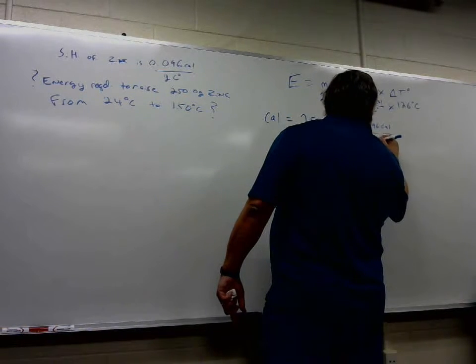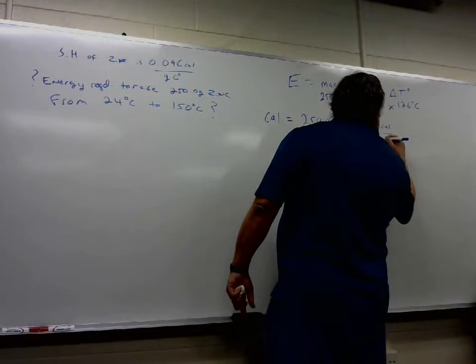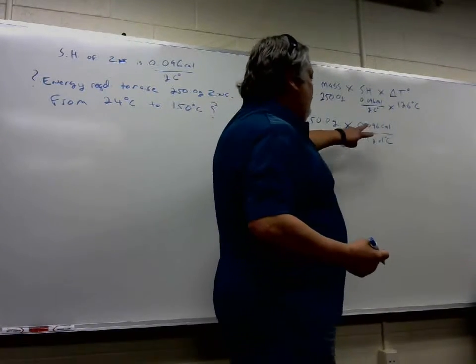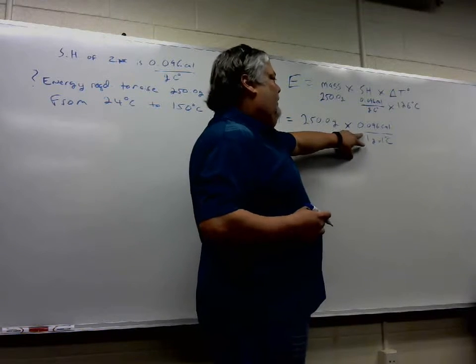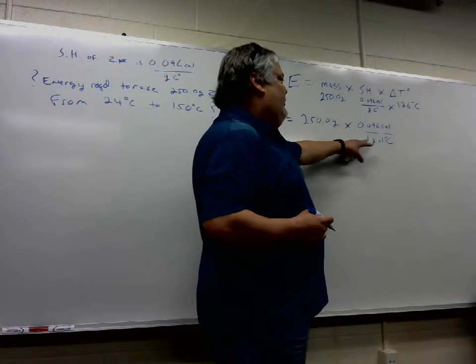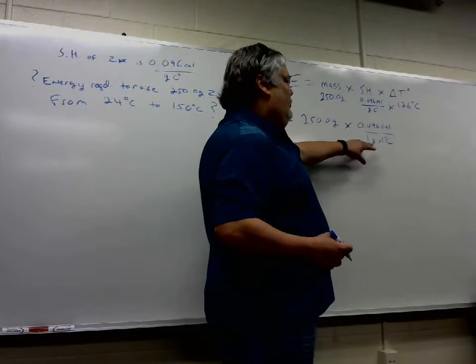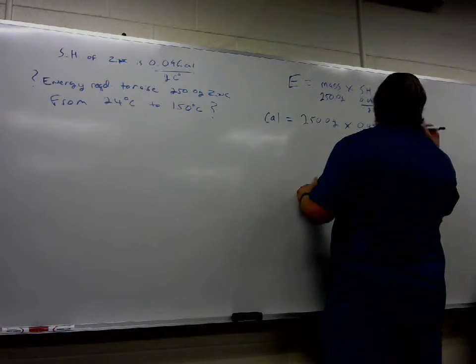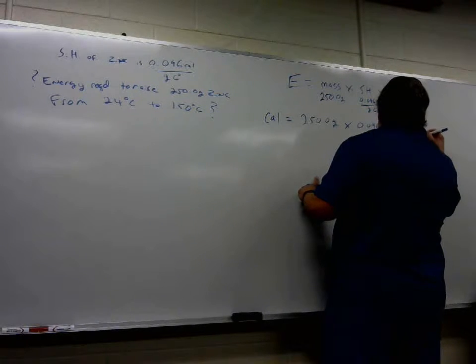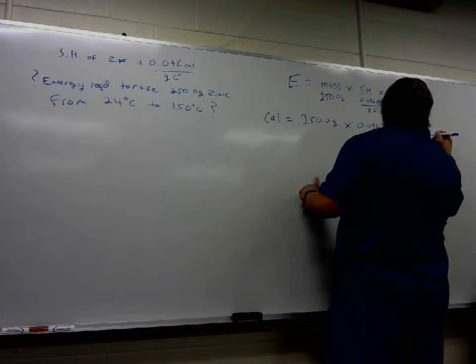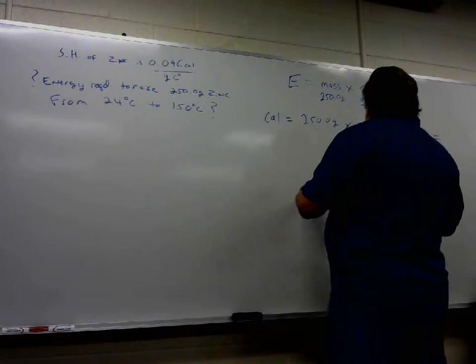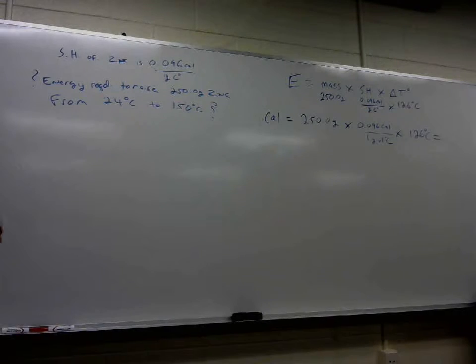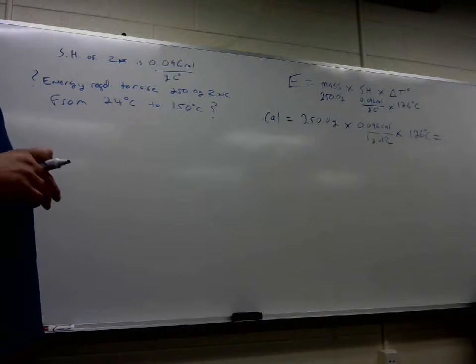So calories equals 250.0 grams of zinc times 0.096 calories, which is the specific heat—the calories required to raise one gram of zinc by one degree Celsius—times 126 degrees Celsius. So now let's do the math. Multiply that straight across.